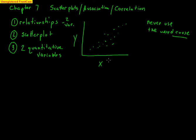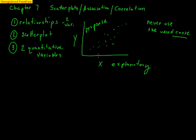We want to name these variables. We call x the explanatory variable and y the response variable. One way to look at it: x does the explaining and y does the responding to x. X is the explanatory variable — x explains y. It does not cause, it explains. Y responds to x.